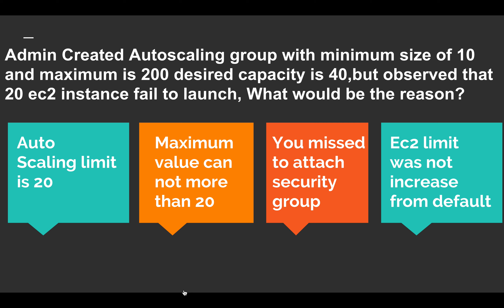The options are: first, the auto scaling limit is 20; second, the maximum value cannot be more than 20; third, you missed to attach the security group; and the last option is that the EC2 limit was not increased from the default. Let's discuss each option to find the right answer.